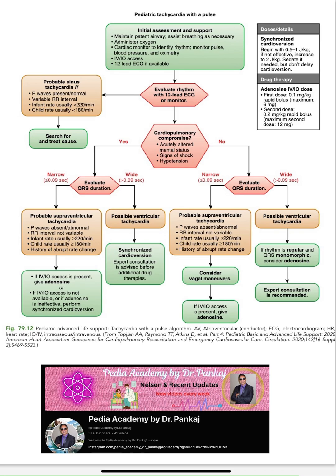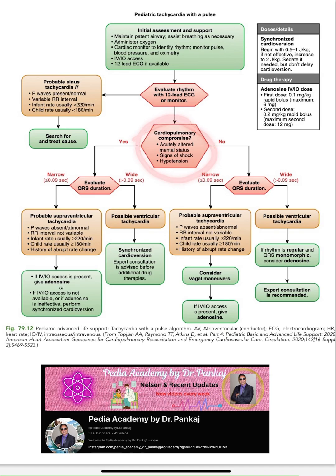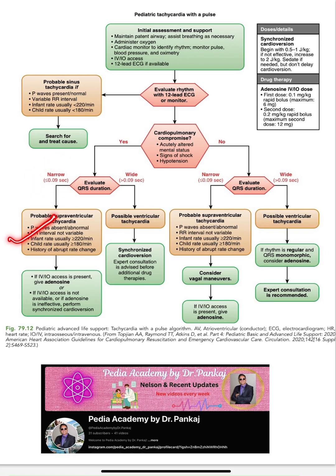For wide complex stable ventricular tachycardia, if the rhythm is regular and QRS is monomorphic, consider adenosine and later follow the ventricular tachycardia algorithm. If the patient has cardiovascular compromise and it is narrow complex tachycardia (PSVT), give adenosine and consider cardioversion.